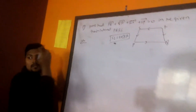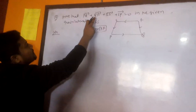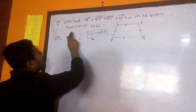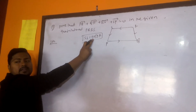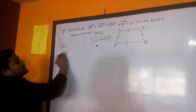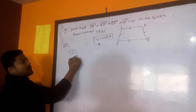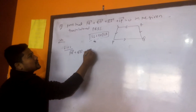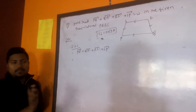Second question: prove that PQ vector plus QR vector plus RS vector plus SP vector equals zero in the given quadrilateral PQRS. This question was asked in SLC 2059R. Again, solution: we have to take LHS first. LHS is PQ vector plus QR vector plus RS vector plus SP vector. Here also use the triangle law of vector addition — be careful.